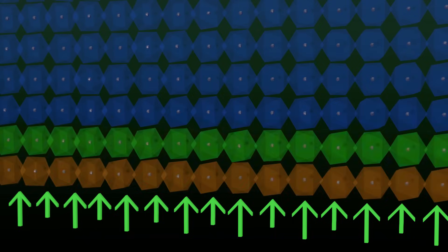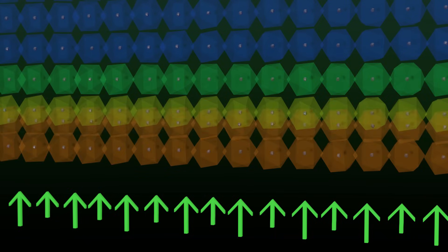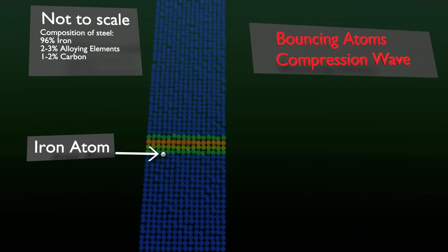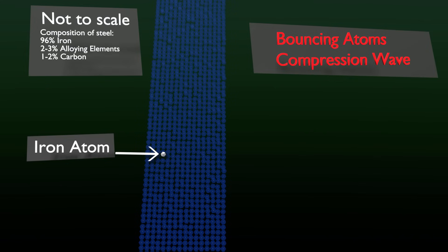These atoms at the earth end of the bar push on their adjacent atoms, and then the next group of atoms up the bar, and so on, all the way until this pushing reaches the moon.